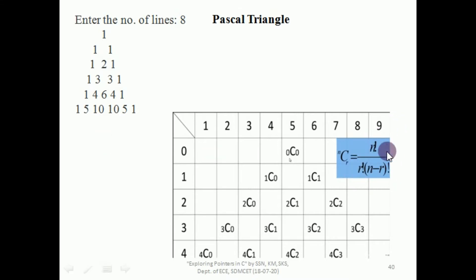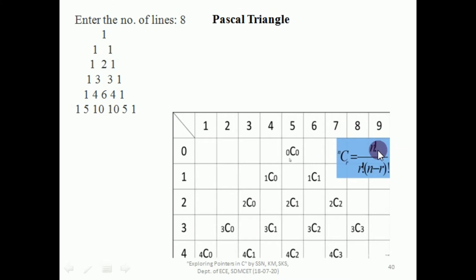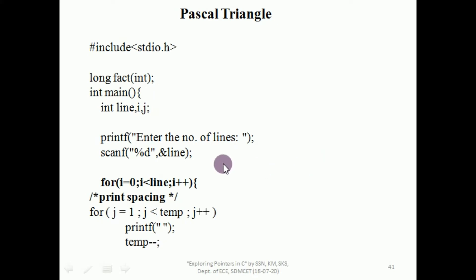The numbers to print on the output screen can be generated using the combination formula. We already know the logic of factorial. I'll write a function for factorial and use this formula to print each number — in place of a star, we are printing a number generated by this formula. The value of n changes according to the row and the value of r changes according to the column.